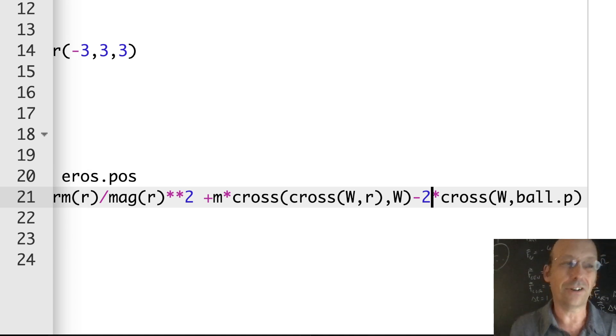And then finally I have negative 2 times m times cross omega v, which is ball dot p divided by the mass. But I put the mass out here so I can factor that out. Ball dot p, and my mass is still there. Mass is a scalar so you can commute it into the thing.